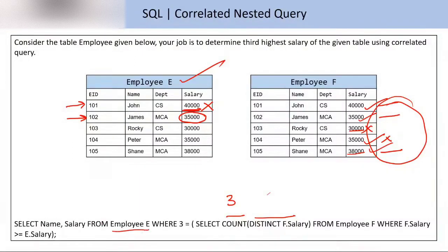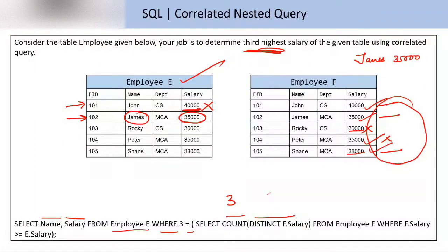From employee, WHERE 3 = 3 — yes, condition is true. So I'll select the name and salary of the currently selected tuple. The tuple selected is James and salary 35,000. The answer is James and 35,000. And 35,000 is indeed the third highest salary — 40,000 is first highest, 38,000 is second, and James is 35,000. Now, Peter is also 35,000, and the query is still executing.